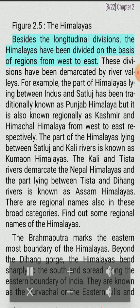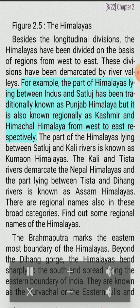Besides the longitudinal divisions, the Himalayas have been divided on the basis of regions from west to east, demarcated by river valleys. The part of the Himalayas lying between the Indus and Satluj is traditionally known as Punjab Himalaya, also known regionally as Kashmir and Himachal Himalaya from west to east. The part lying between the Satluj and Kali rivers is known as Kumaon Himalayas. The Kali and Tista rivers demarcate the Nepal Himalayas, and the part between the Tista and Dihang rivers is known as Assam Himalayas.